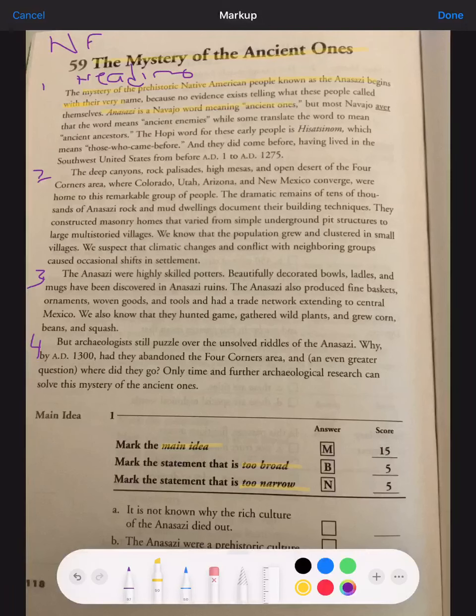And then there's the word aver that we were talking about earlier. And most Navajo aver that the word means ancient enemies, while some translate the word to mean ancient ancestors. So this aver word can mean ancient enemies or ancient ancestors.